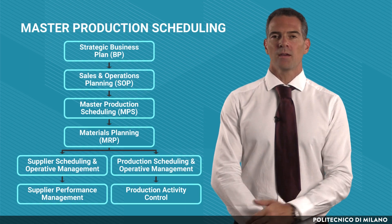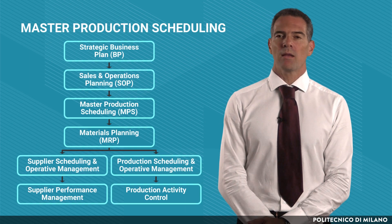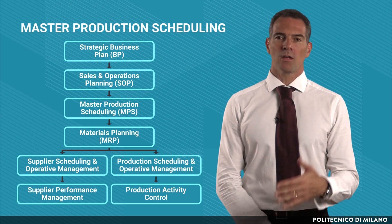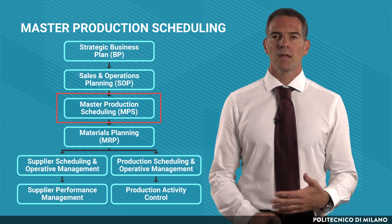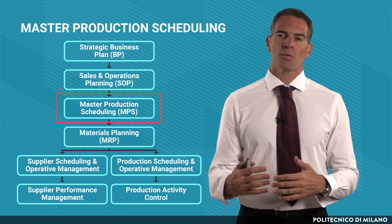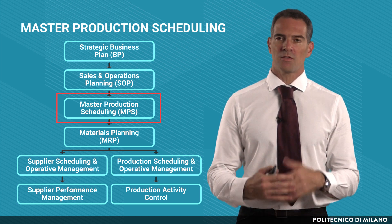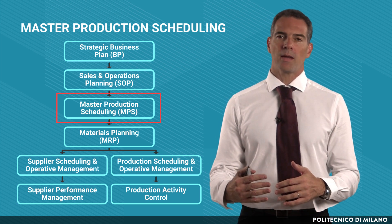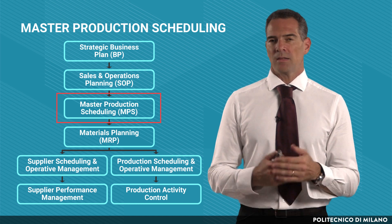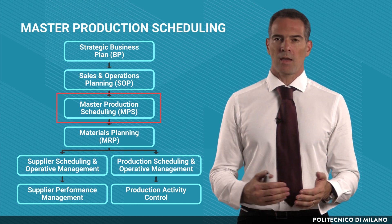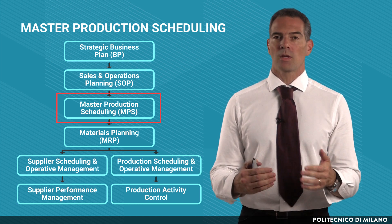In this lecture we are going to deepen the topic of Master Production Scheduling, a very relevant phase in the whole production planning process, between the strategic operation planning and sales and operation planning above, and materials planning and production scheduling below.